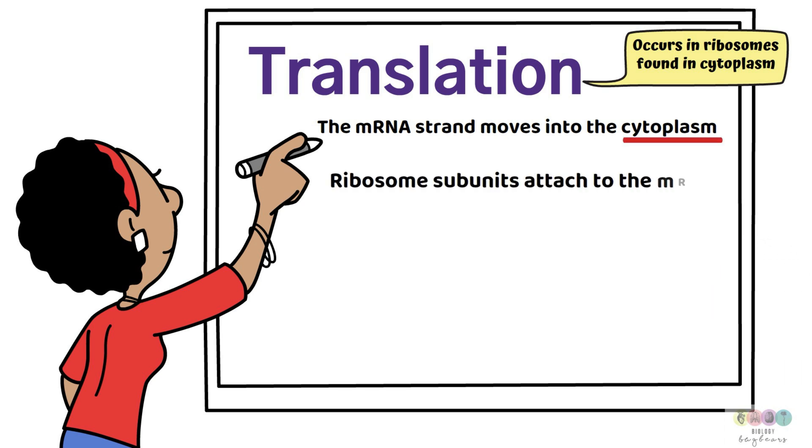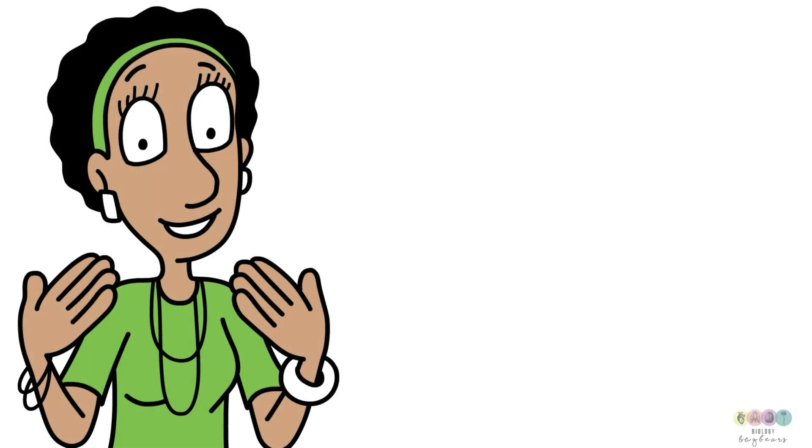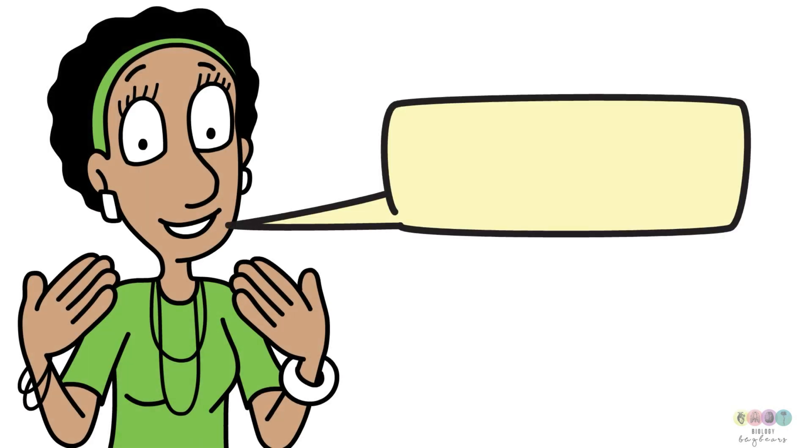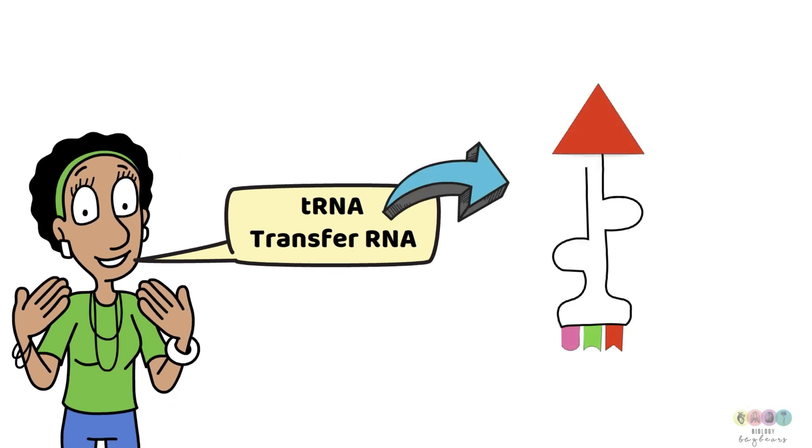Ribosome subunits attach to the messenger RNA. So the messenger RNA gets sandwiched between these two subunits which make up ribosomes. Free floating transfer RNAs with complementary anticodons are located in the cytoplasm. And I think this is where everyone goes, this is too difficult because this is the tricky part. The transfer RNAs are where everyone gets lost. So let's just examine transfer RNA and look at what it is.